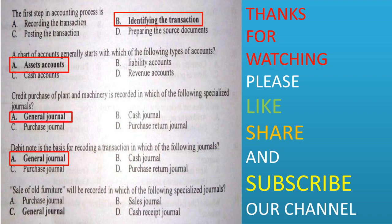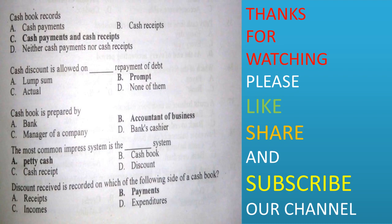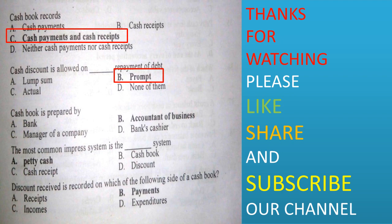Sale of old furniture will be recorded in which of the following specialized journals? Purchase journal, sale journal, general journal, or cash receipt journal. Option C is correct. Cash book records: cash payments, cash receipts, both cash payments and cash receipts, or neither. Option C is correct. Cash discount is allowed on repayment of debt: lump sum, from actual, or none of them. Option B is correct.